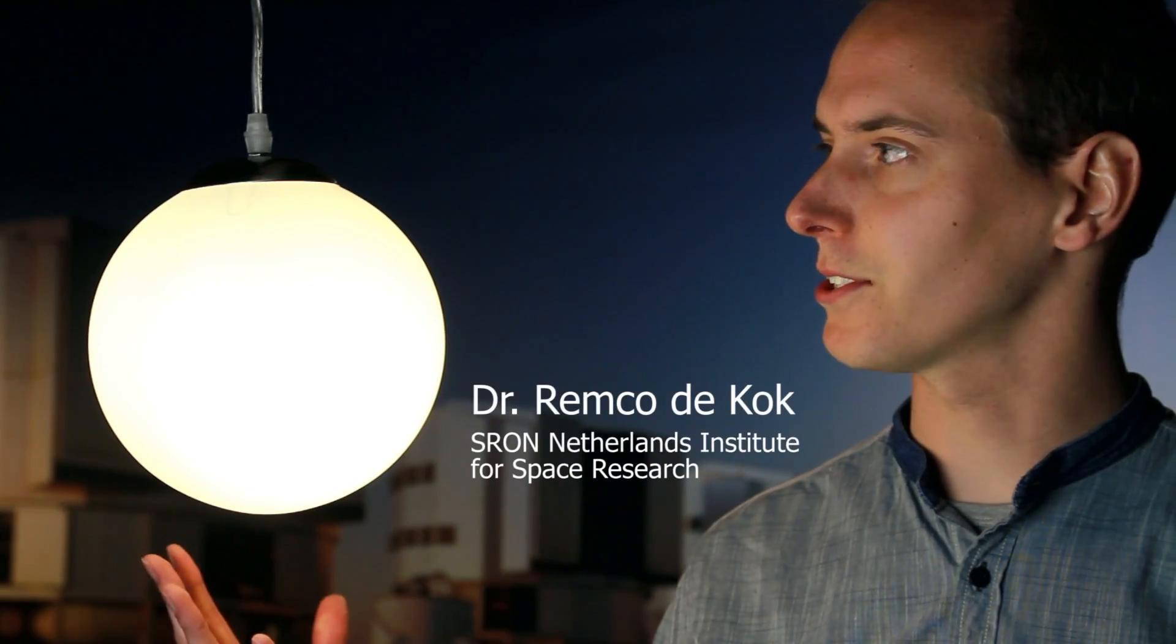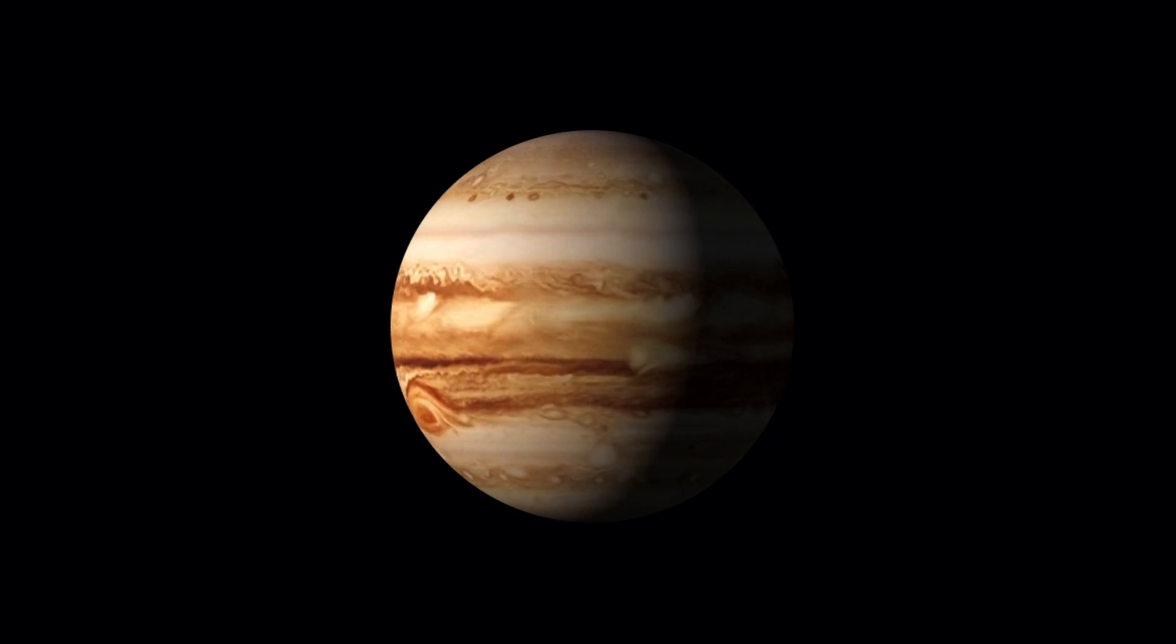Imagine, this is Beta Pictoris, a very nearby star, and around it is Beta Pictoris B. What we found is that it is rotating very fast around its spin axis, much faster than Jupiter.